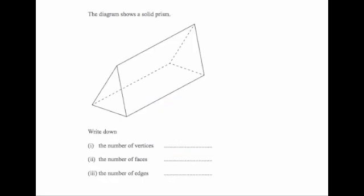Let's have a look at the next exam question. Here the diagram shows a solid prism — this is actually a triangular prism, sometimes called the Toblerone bar shape. It's got a triangle at the front and it has the same cross section the whole way through. The question says write down the number of vertices. So we count: one, two, three vertices at the front, and one, two, three vertices at the back — so altogether there'd be six vertices.